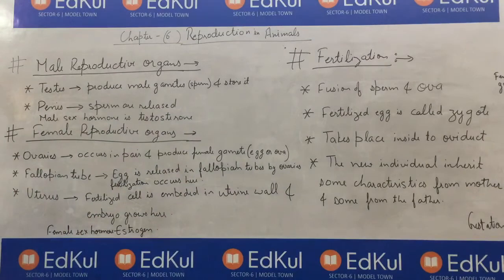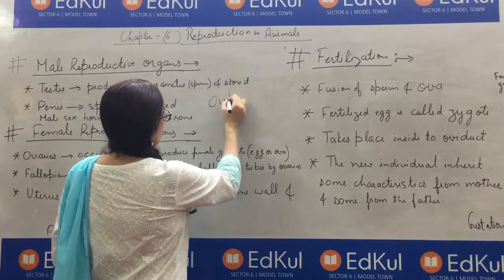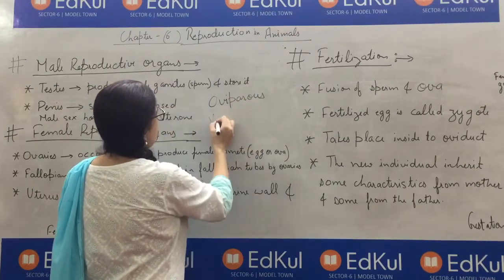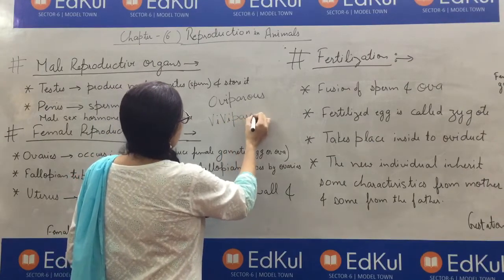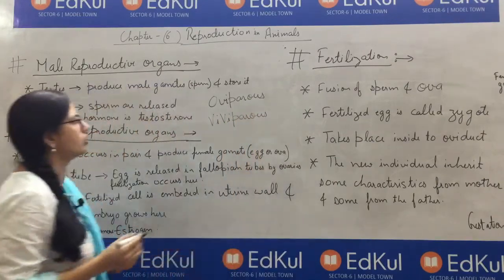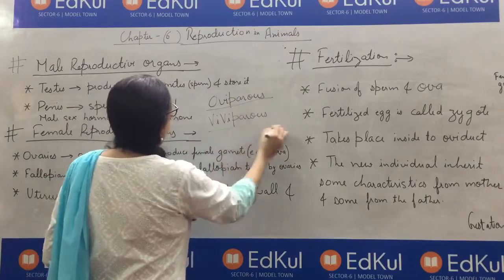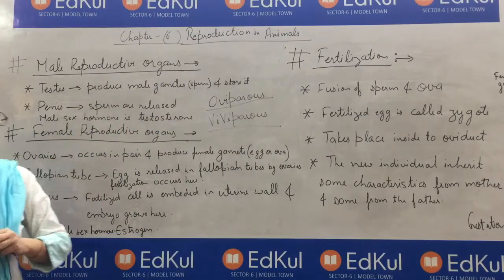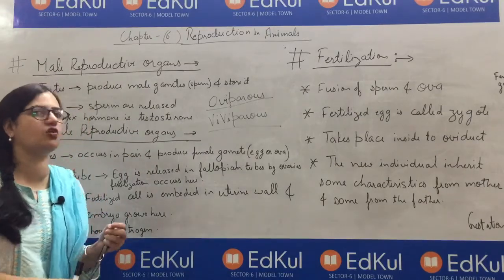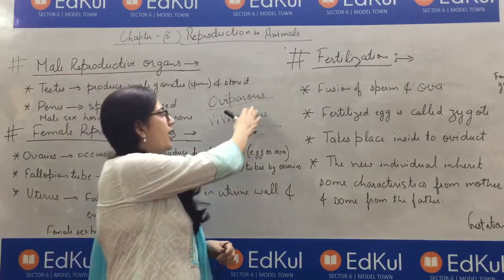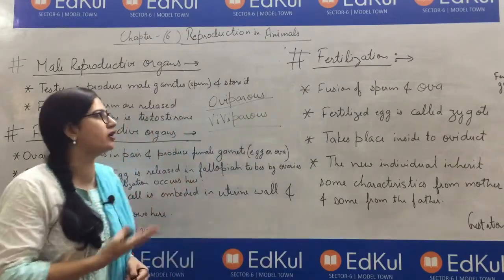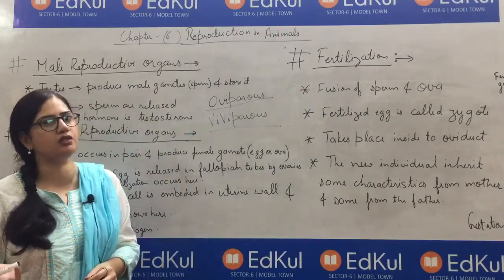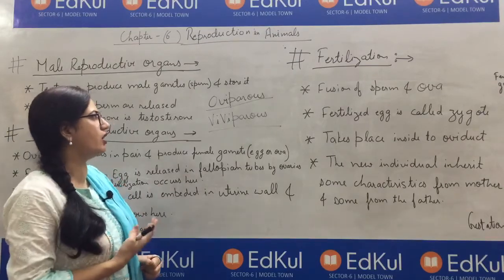A few topics are still left in this chapter, that is oviparous and viviparous organisms. Oviparous organisms are those that do not give birth to young ones but lay eggs. Those egg-laying animals or birds are called oviparous. Examples are birds and snakes.